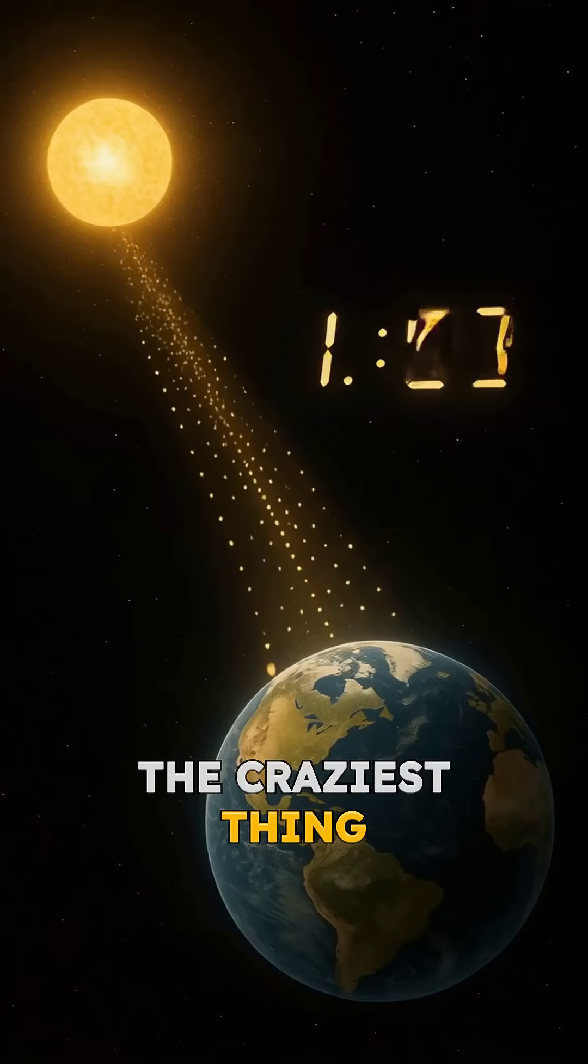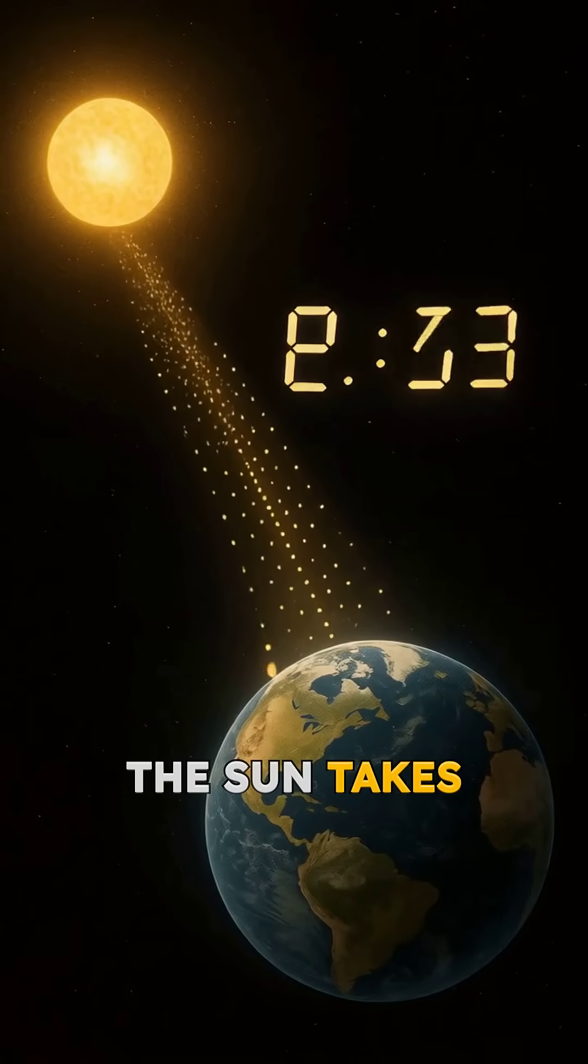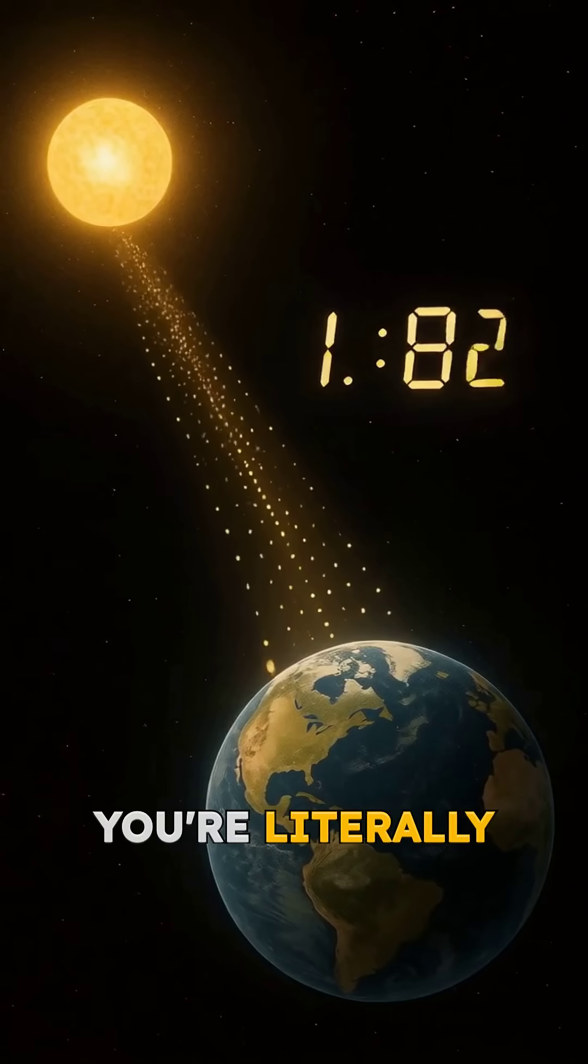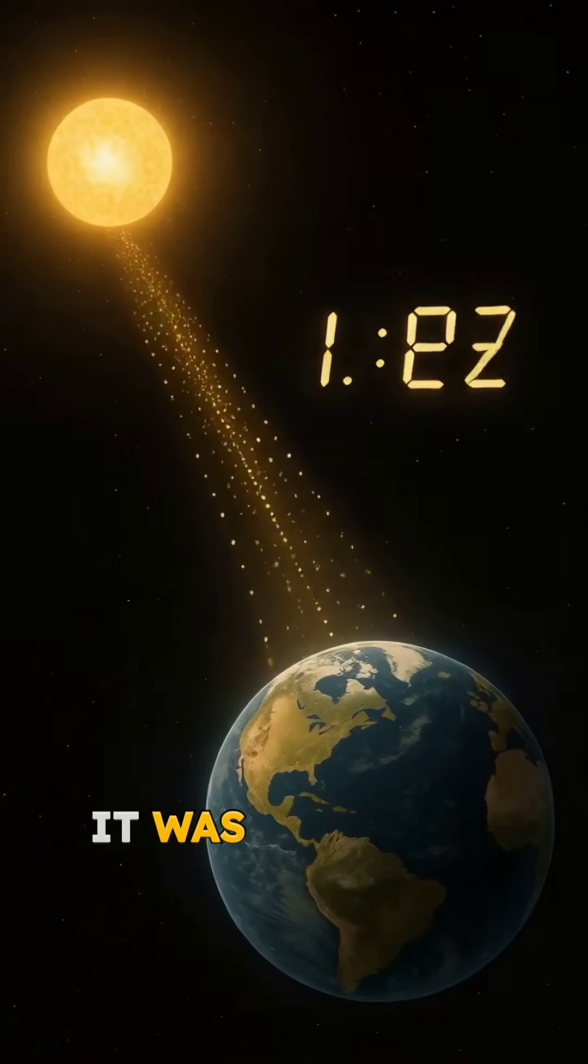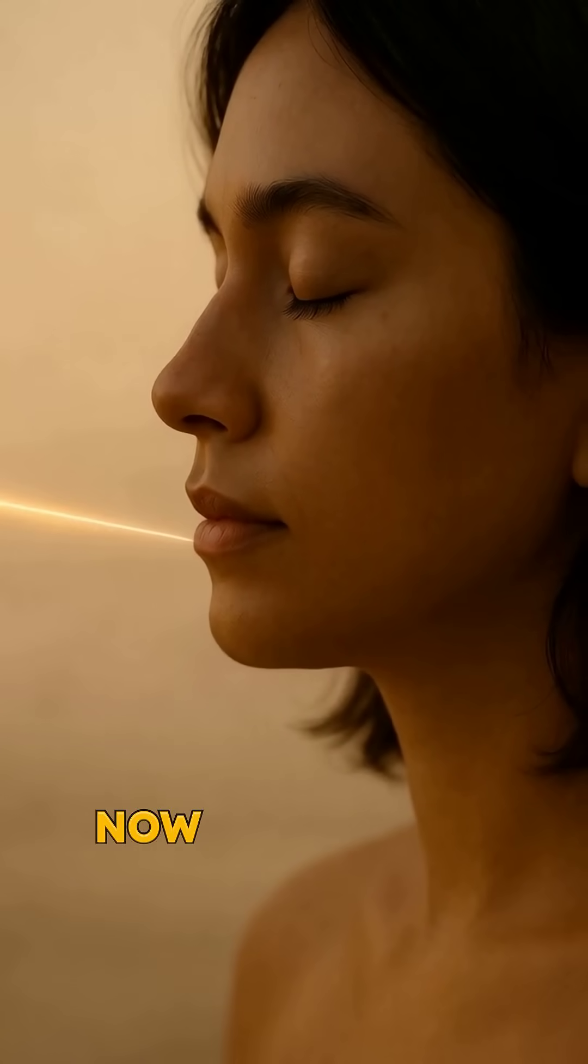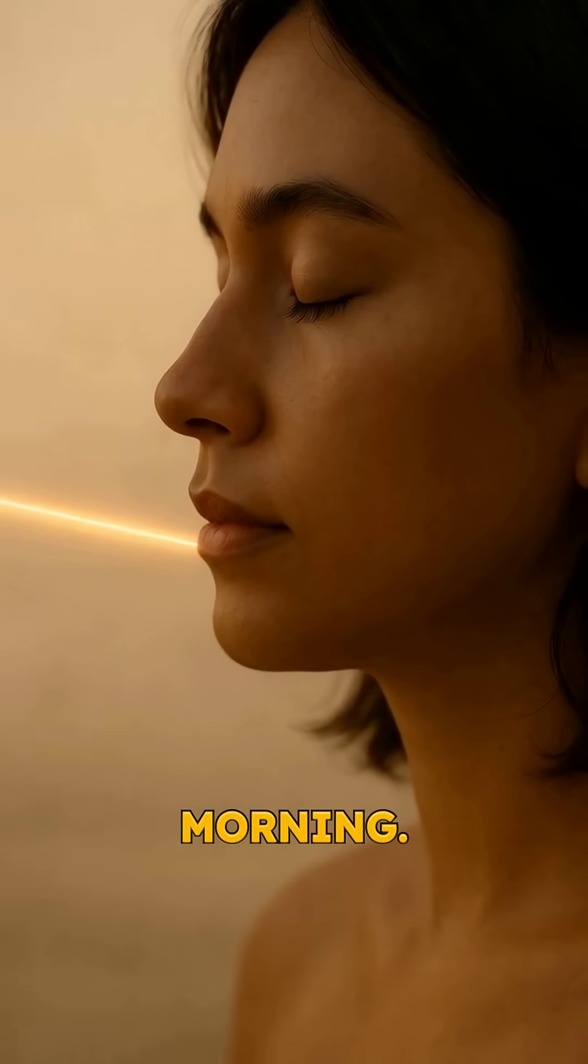The craziest thing is that light from the sun takes about eight minutes to reach Earth. So when you look up during the day, you're literally seeing the sun as it was eight minutes ago. Every photon hitting your face right now started its journey before you even woke up this morning.